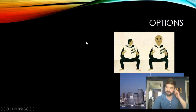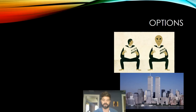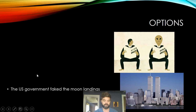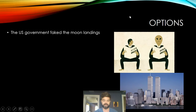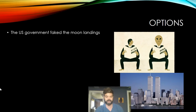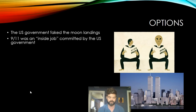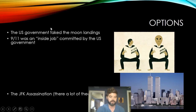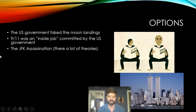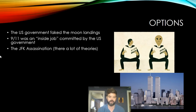Here are the different conspiracy theories you can pick from. Number one: the U.S. government faked the moon landings — kind of the top number one conspiracy theory that everybody is familiar with. Number two: 9/11 was an inside job committed by the U.S. government, also a common conspiracy theory I hear constantly from people. Number three: the JFK assassination — there are lots of different theories involved in this event, and in your research you can figure out what exact theory you want to look into.